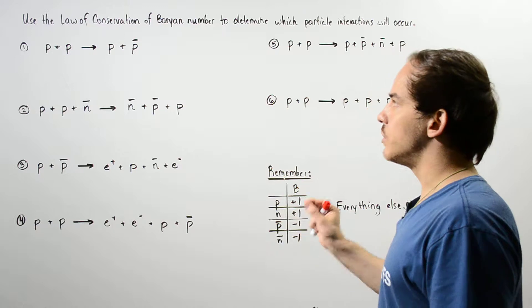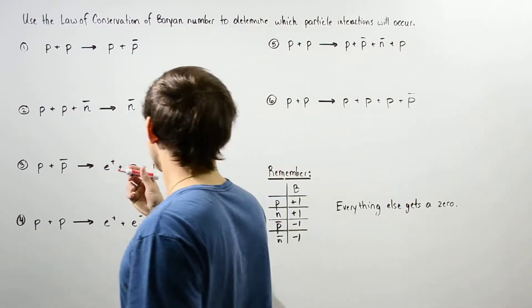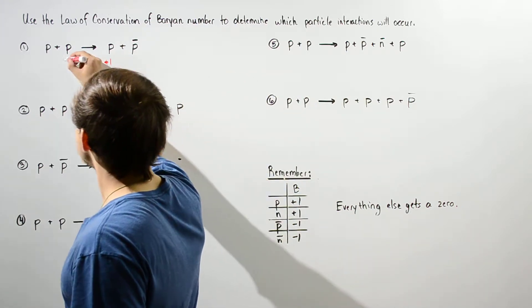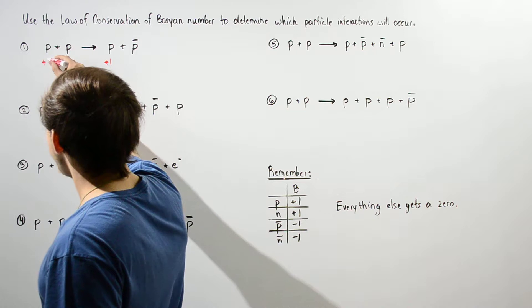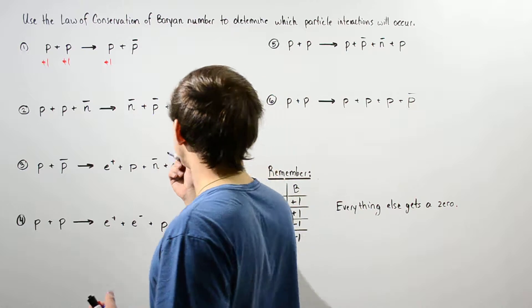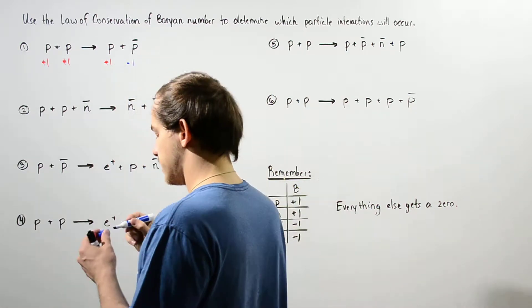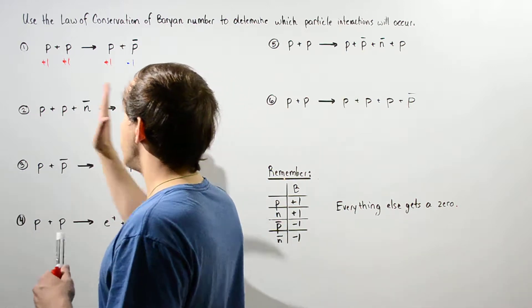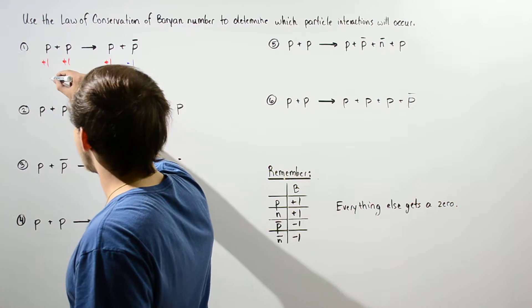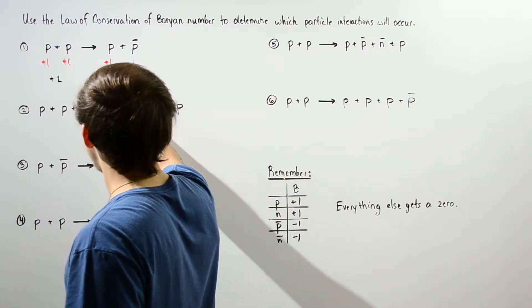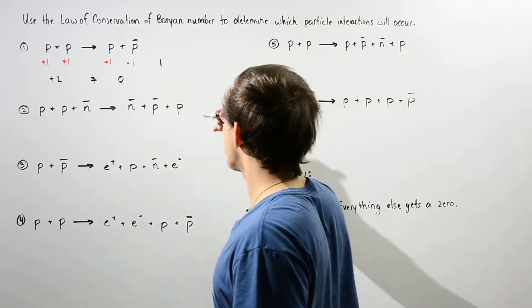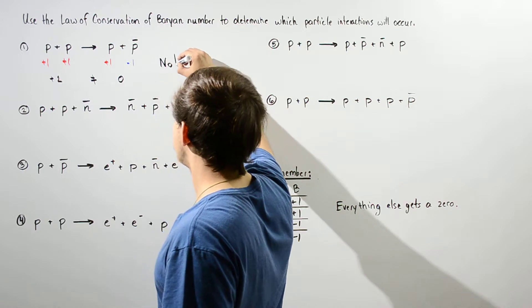Let's label the baryon number for interaction one. A proton gets a positive one. The antiproton gets a negative one. On the right side we have zero, and on the left side we have a value of positive two. Since these are not equal, the baryon number is not conserved, and so this reaction will not take place in nature.